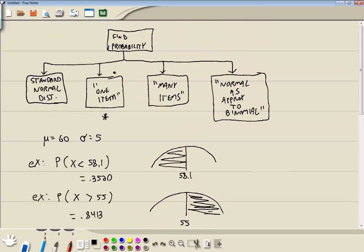Now this was based upon, I didn't write a specific problem out, but like we're picking out somebody at random. We're finding the probability that a person has an age less than 58.1 or a person has an age greater than 55. So we're talking about one item, one person. In the next video we'll take a look at many items. We're taking a look at 30 people and finding that their average age is less than 58.1. And that's also known as a central limit theorem.